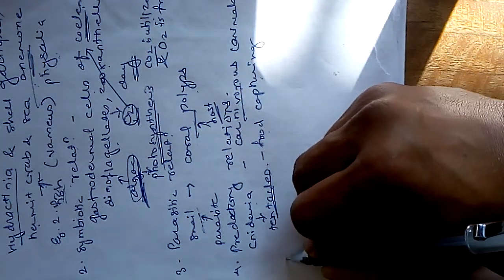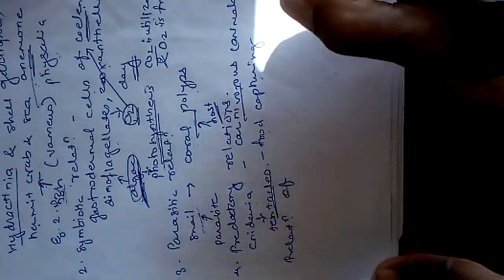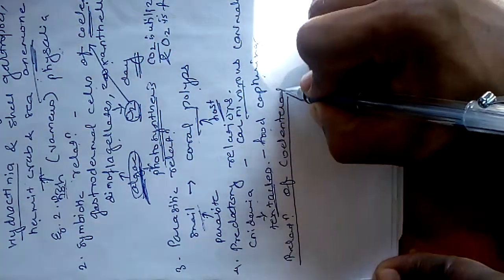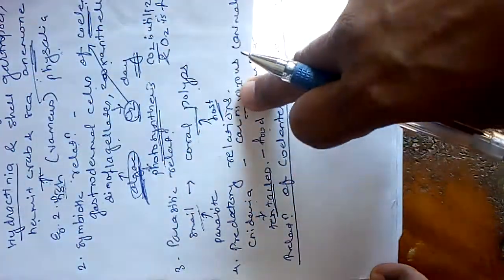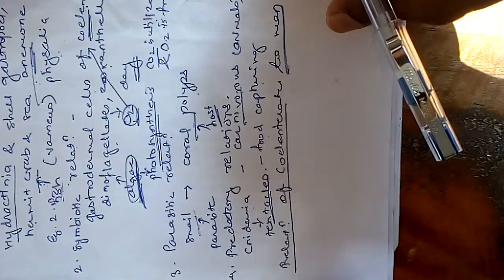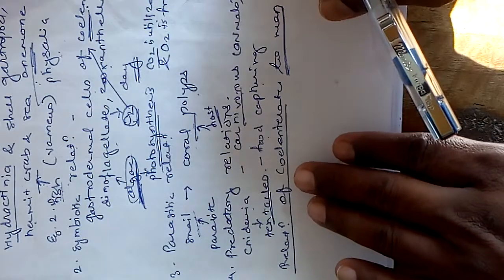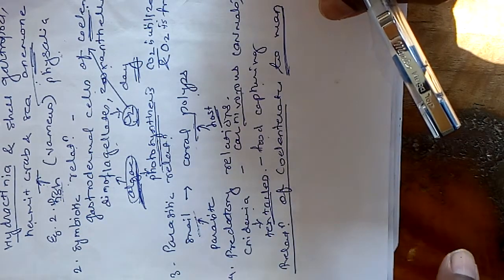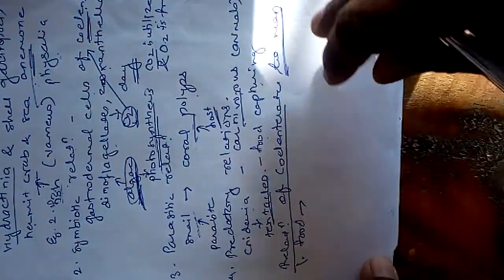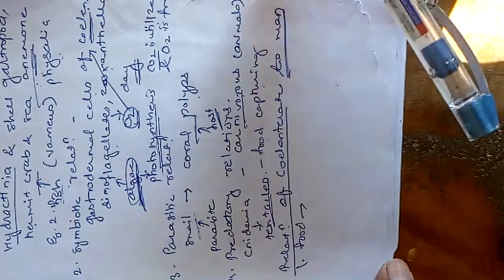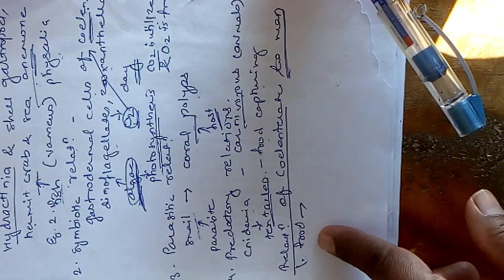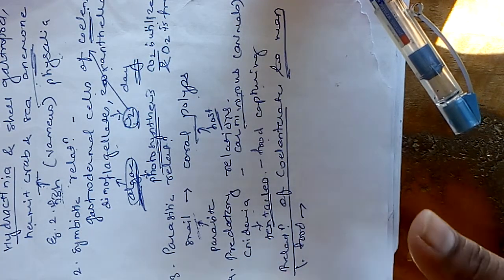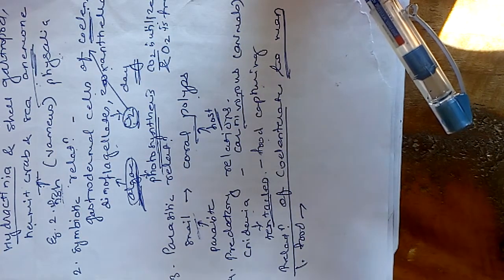Cnidarians also show a relationship with man. We will now study the relation of cnidarians to man. Unlike aquatic animals, there is a relationship between the cnidarian and human beings. Jellyfishes and sea anemones are used as food material. They are used as food in very few countries, meaning man feeds on this material.